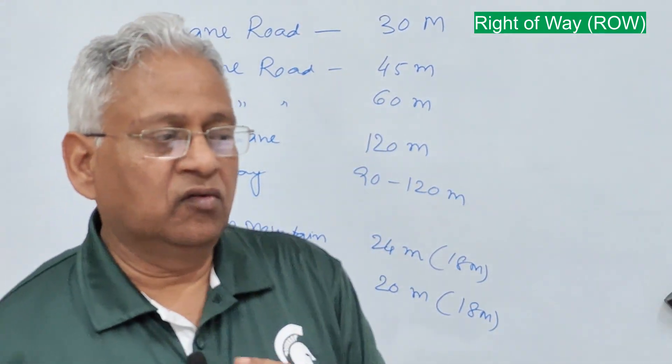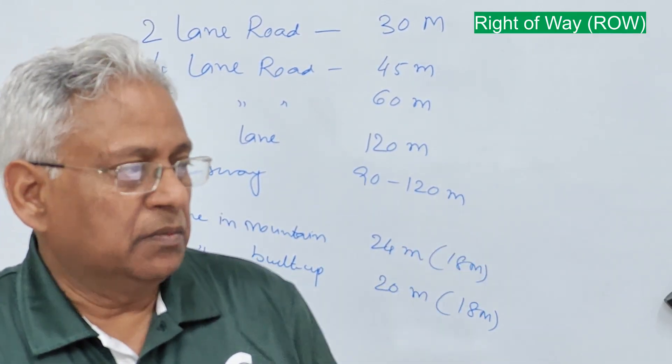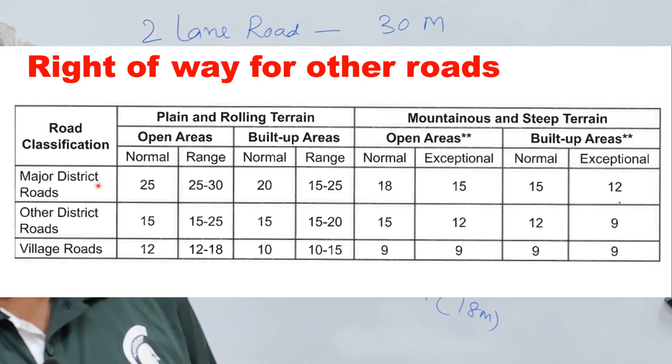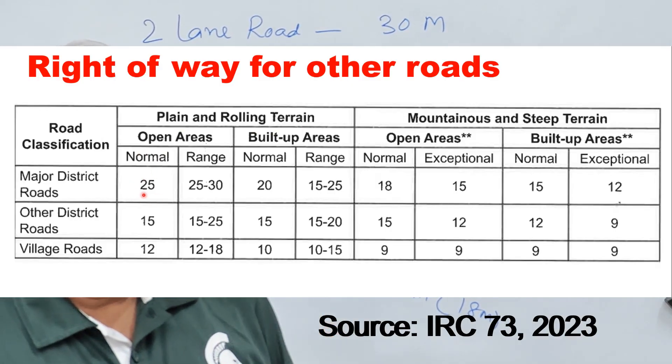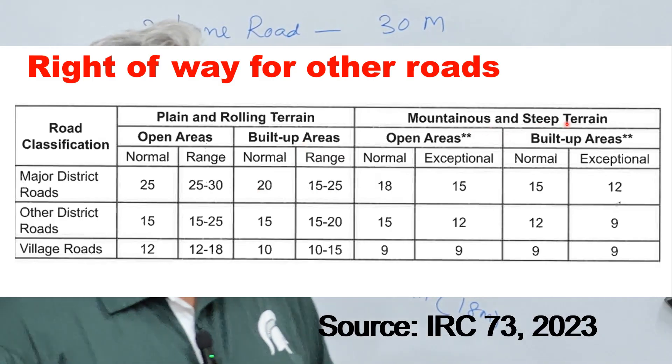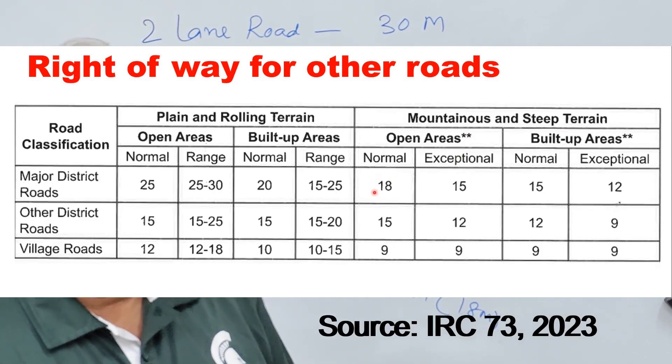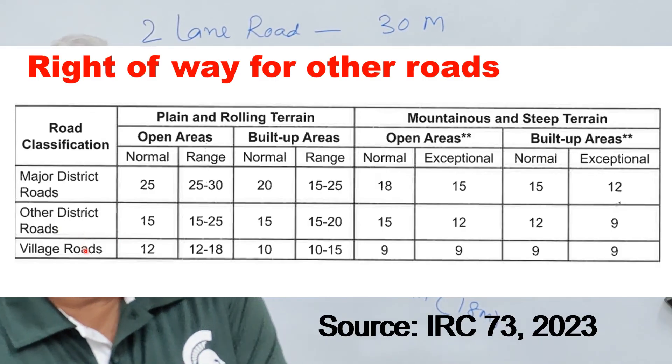Similarly recommended right of way for other class of highways like MDR, ODR and village roads these are given in this table. For major district road in plain and rolling terrain this normal width of right of way is 25 meter. But range is given as 25 to 30 meter. And similarly for built up area it is 20 to 20 meter or 15 to 25 meter. In mountainous region it is reduced to a normal width of 18 meter and in exceptional cases it can be 15 meter. In built up area located in mountainous and steep terrain it is normally 15 meter but it can be reduced to 12 meter in exceptional cases where land is not available. Similarly for other district roads and for village roads.